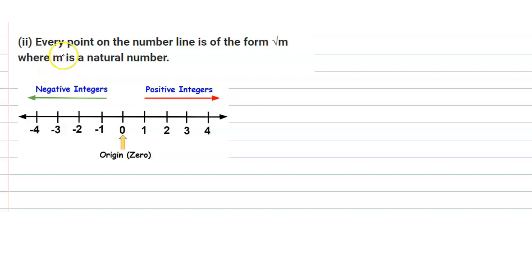Hello everyone. The given question is: every point on the number line is of the form root m where m is a natural number.